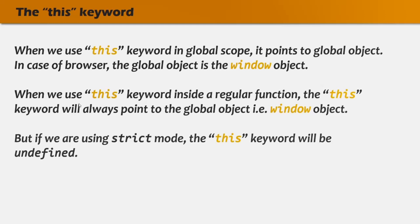When we use this keyword inside a regular function, this keyword will always point to the global object, that is the window object. But if we use strict mode, in that case, this keyword inside a regular function will point to undefined — its value will be undefined. Let's understand this practically.